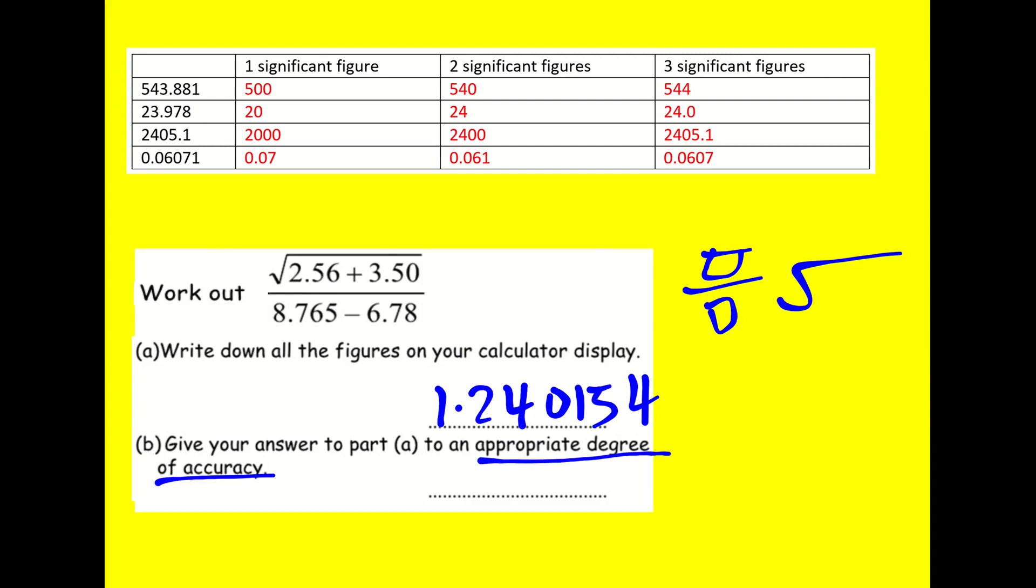Now give your answer to part A to an appropriate degree of accuracy. This is a new word. What does it mean by that? It's not saying round it to one, two or three significant figures. It's not demanding this. We have to figure out what would be sensible. Okay, here goes.